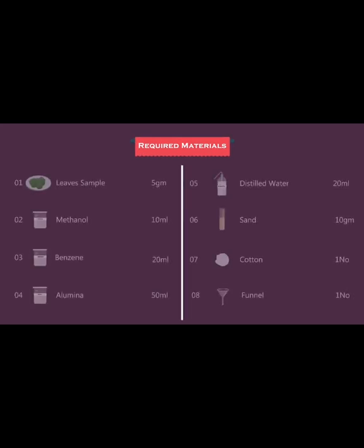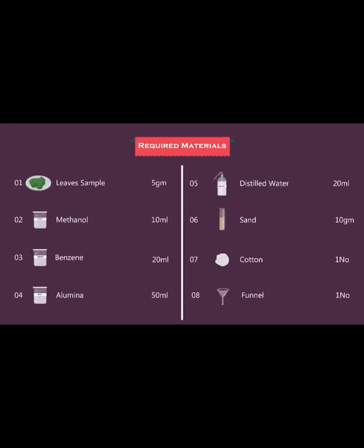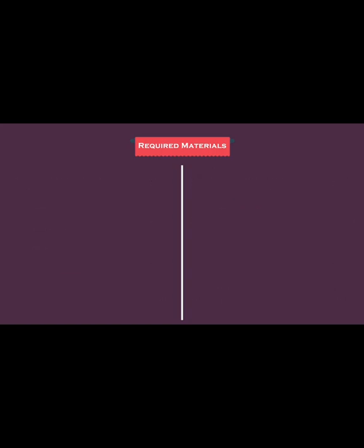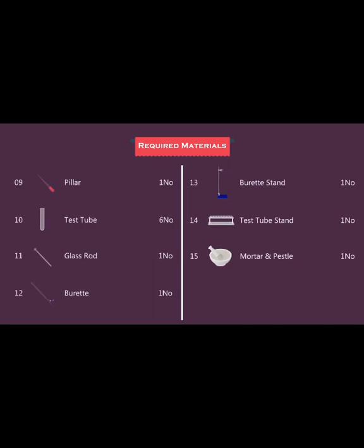In a basic level laboratory, we need certain materials to perform these experiments. First is a leaf sample, methanol, benzene, alumina, distilled water, cotton, funnel, sand. We also need a pillar, test tubes, rods, burette, burette stand, test tube stand, and mortar and pestle. These are all our requirements.